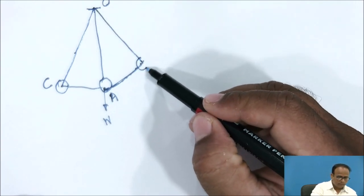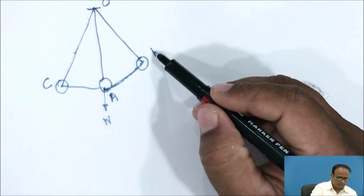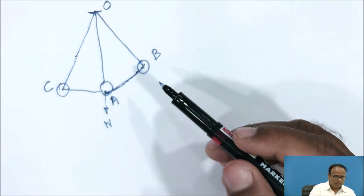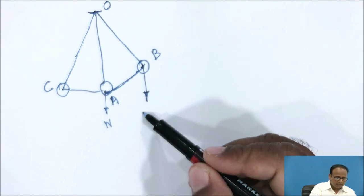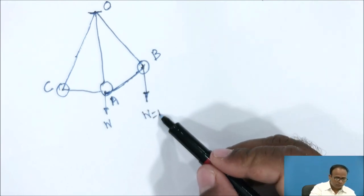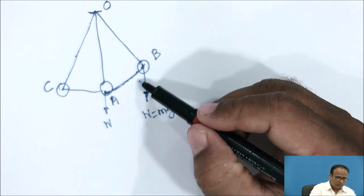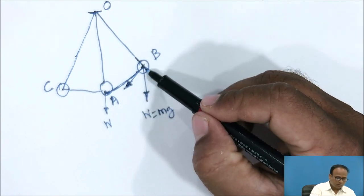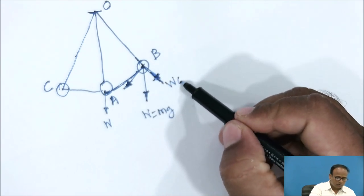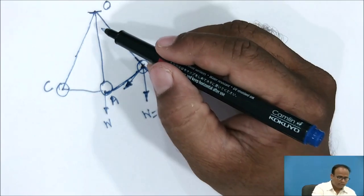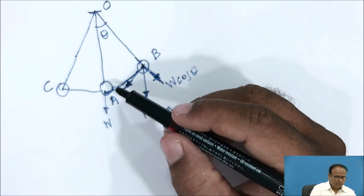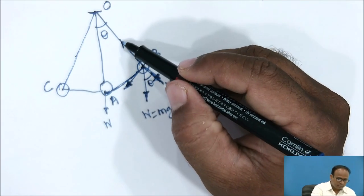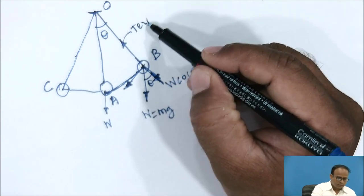There is another location of this pendulum, that is at B. Let the position of pendulum be at B — it is subjected to various forces, that is the weight of the pendulum, W equals to mg. This component of weight has two components: one is along the string, that is W cos theta. Let theta be the angle made by this pendulum with respect to the mean position. There is a tension created in the string.